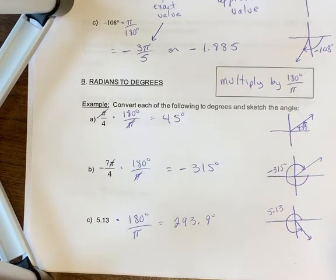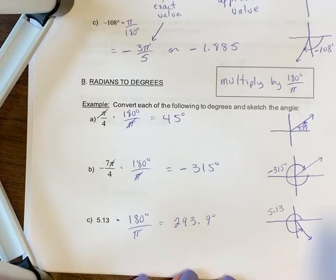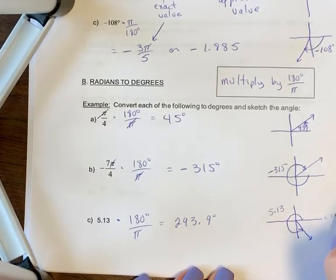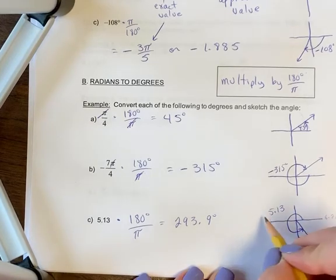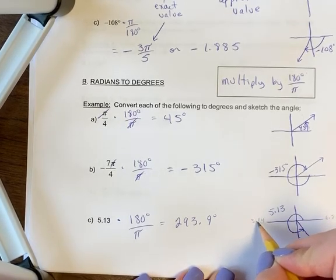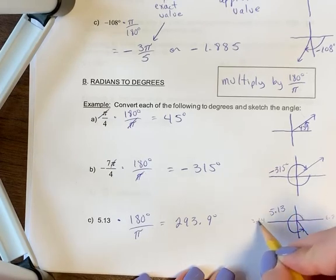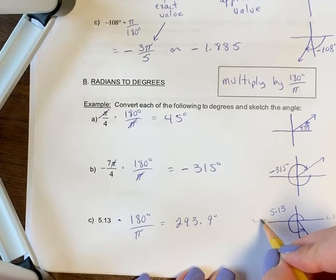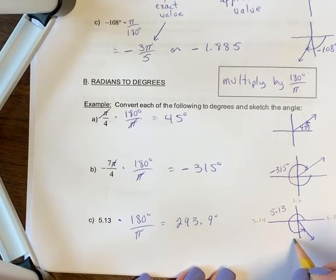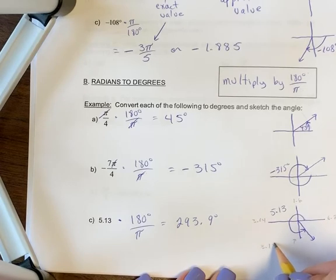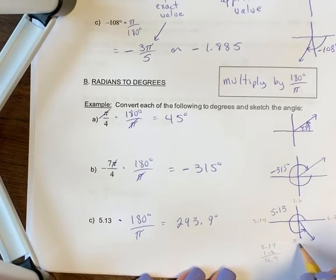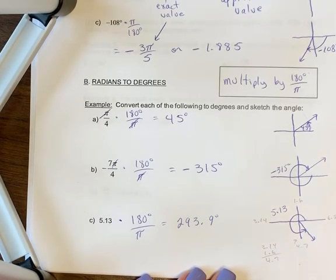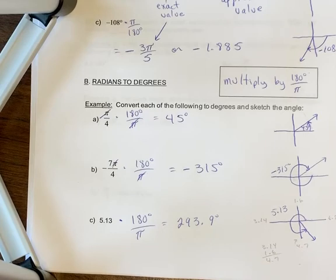Now, if you did not convert this to degrees, you could still remember that this would be where 6.28 is, which is 2π. This is 3.14, and half of π, half of 3 is 1.5 plus 0.14 would be a little bit more. So this is 1.6. And so this would be 3.14 plus 1.6, so approximately 4.7. So you can tell that 5.13 is past 4.7, but not all the way up to 6.28. So that's another way you can strategize.